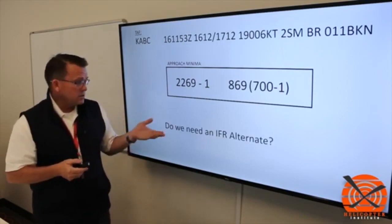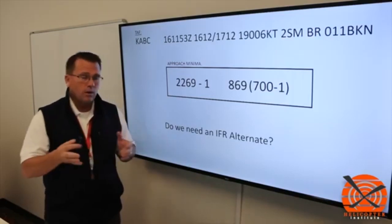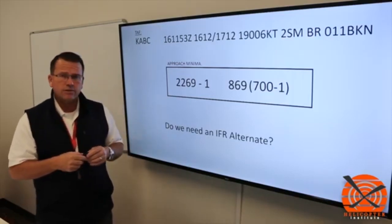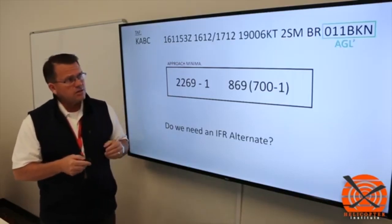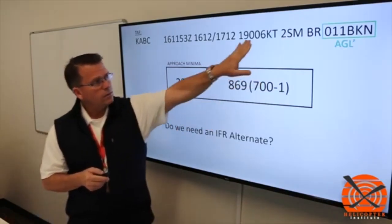In this particular case, we've got to break this down to see what we have. So the question is, do we need an IFR alternate? Do we have the weather to either need an alternate or not? So the first thing we have to do is look at the ceilings. So we know we have visibility, so we're good there based upon the approach plate. It requires one mile, we have two.